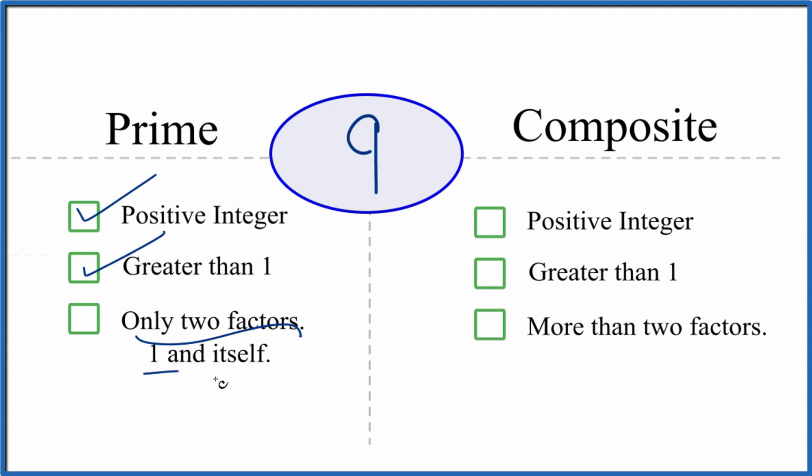Are there only two factors, 1 and 9, that divide evenly into 9? We know that 1 times 9 equals 9, so there's two factors. But are there any more numbers that divide evenly into 9? Well, 3 times 3. So there are four factors that go into 9.